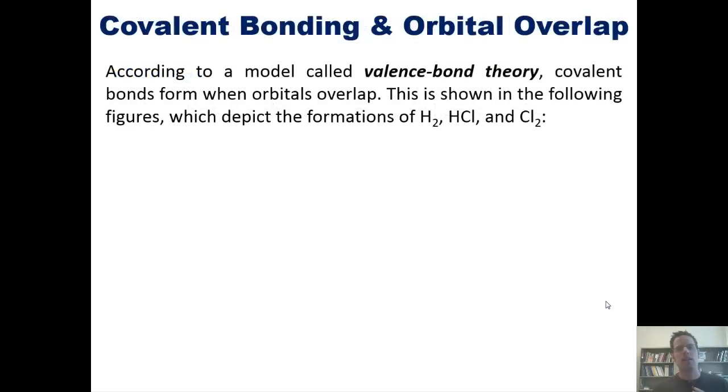According to a model called valence bond theory, covalent bonds form when orbitals overlap. This is shown in the following figures, which depict the formations of hydrogen gas H2, HCl, and Cl2. When you've got two different hydrogen atoms, each of them has a 1s atomic orbital. When they get together to form H2, those atomic orbitals overlap and form kind of some merged, mighty orbital that constitutes what is now known as a molecular orbital for the molecule of H2.